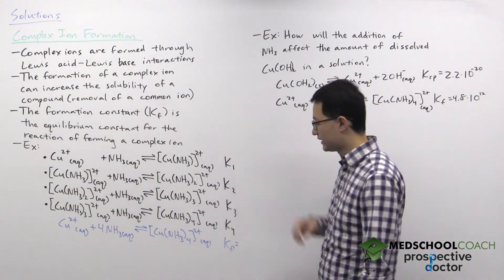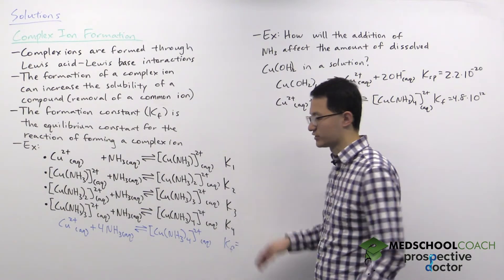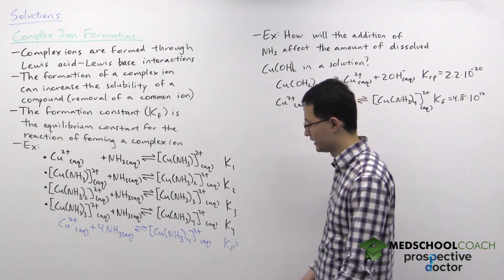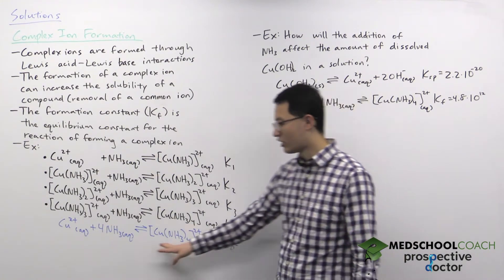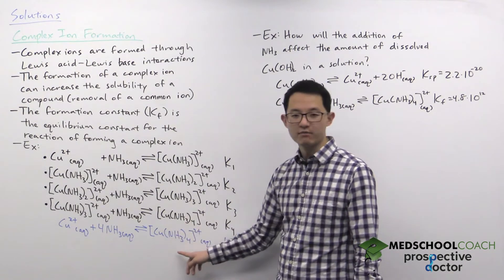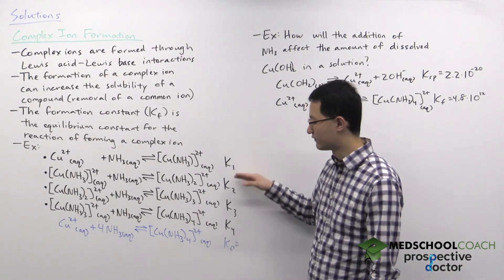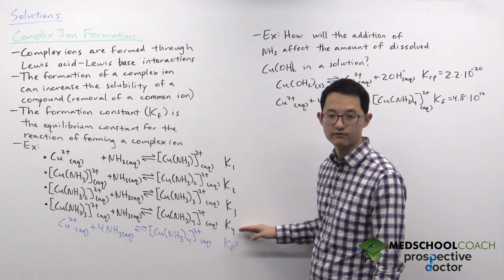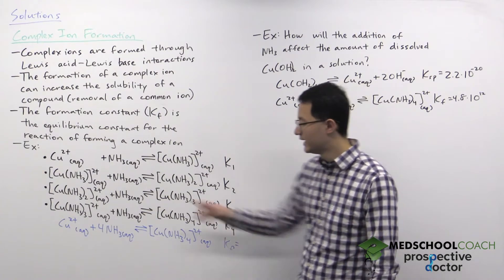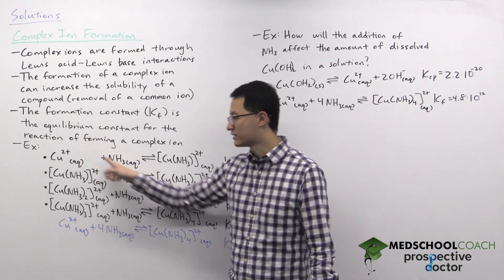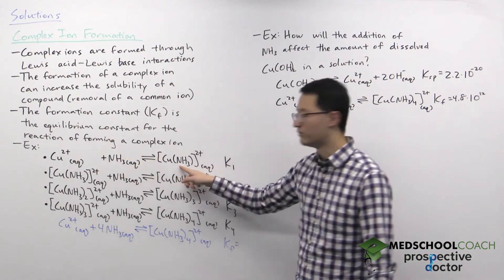So here I have an example showing the reactions involved in the formation of a complex ion. The complex ion is copper with four ammonia molecules and here you have the four individual steps involved in the formation of this complex ion. In each step the copper is going to bind another molecule of ammonia.